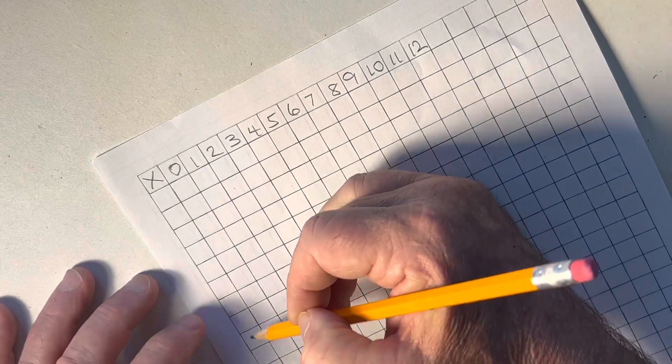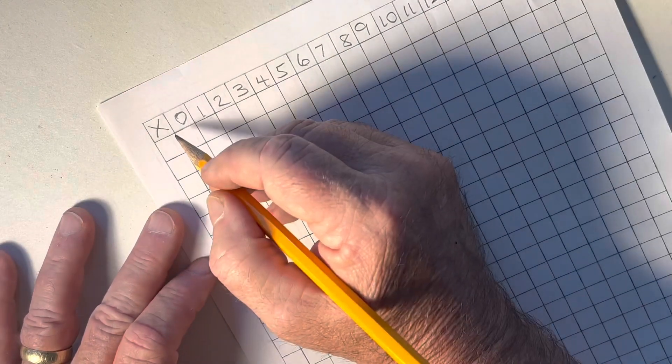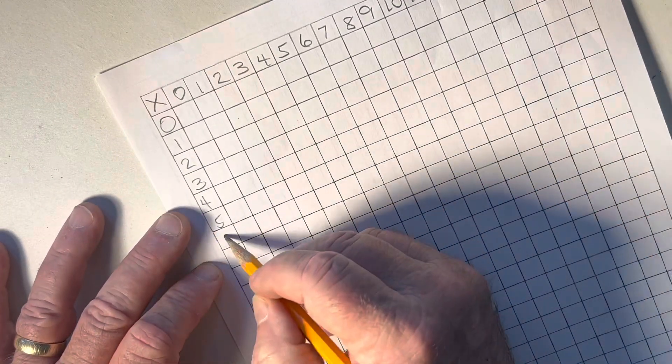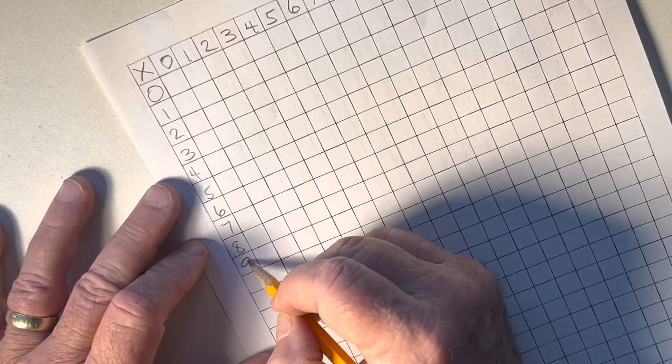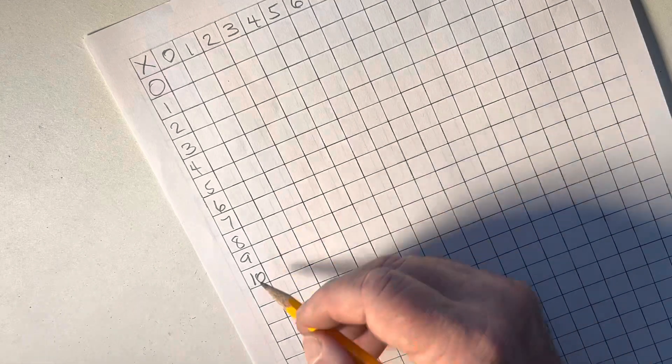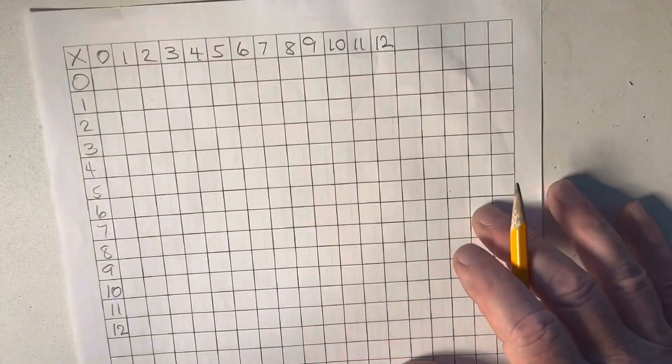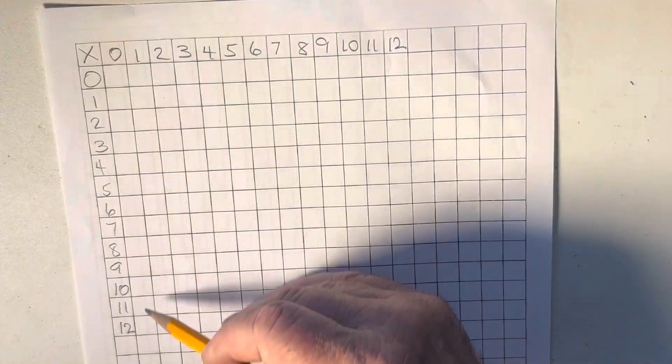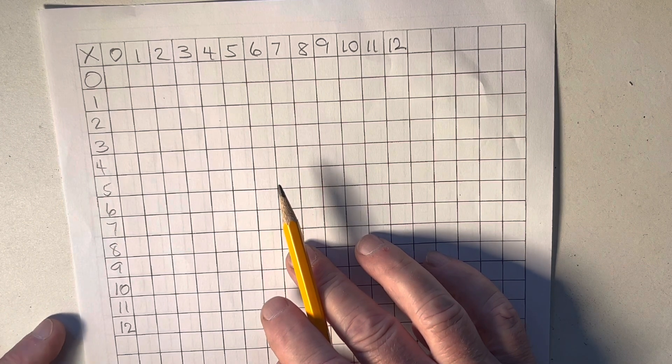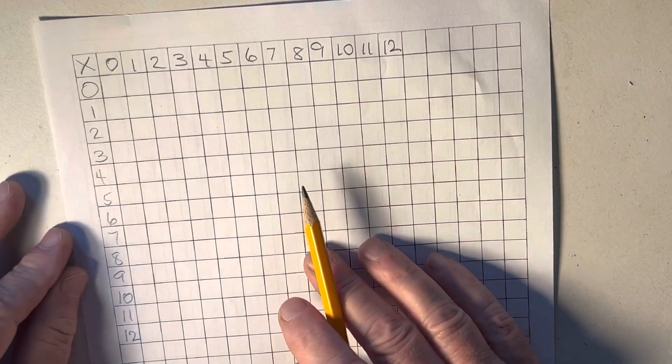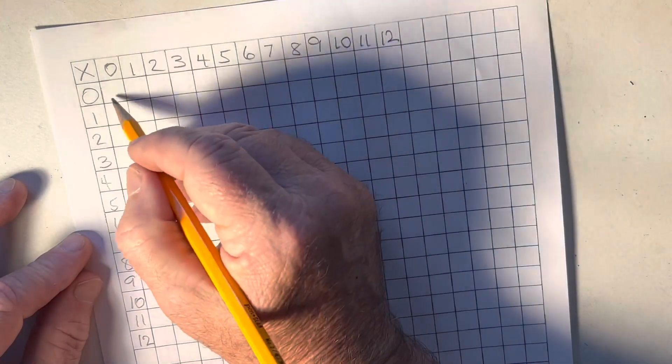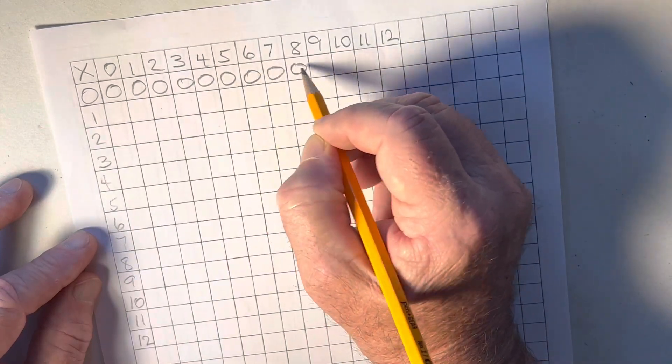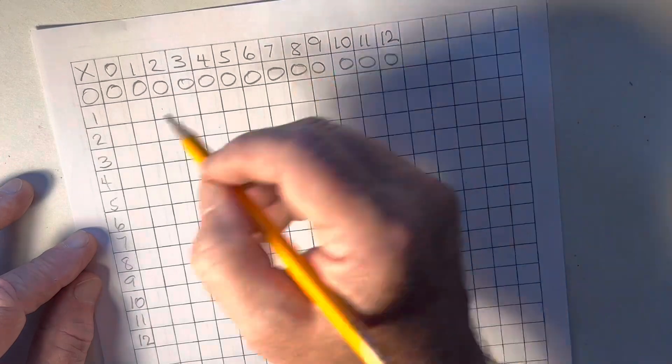Now we're going to go down in this column the same numbers. I'm going to begin with 0, 0, 1, 2, 3, 4, 5, 6, 7, 8, 9, 10, 11, 12. And that's how we begin. Now we're going to do a row of zeros here and zeros going down. The reason we do this is to show the power of zero. Students have to know this when they learn how to divide. So we put zeros here, zero all the way across and down.